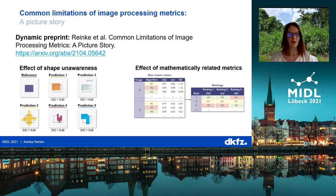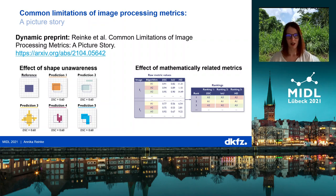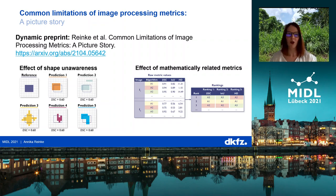In parallel, we are also working on a dynamic preprint on common limitations of image processing metrics that currently covers different problems of metrics in segmentation, and we would like to extend it to classification and detection as well. If you are aware of limitations, we are happy to incorporate you as a co-author for substantial contributions or drafts of different sections.